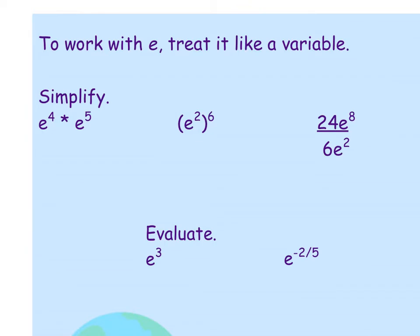When we work with base e, we treat it like a variable. We can simplify and evaluate. For the simplify part, think properties of exponents. Base e is just like any variable. If you multiply bases together, we combine the exponents by adding. e to the 4 plus 5 power would be e to the 9th power, and that's your simplified base.